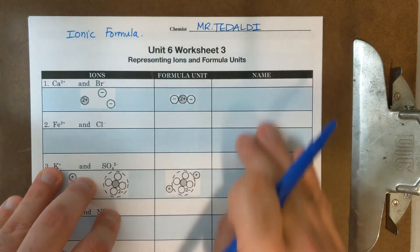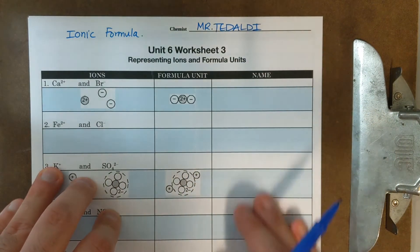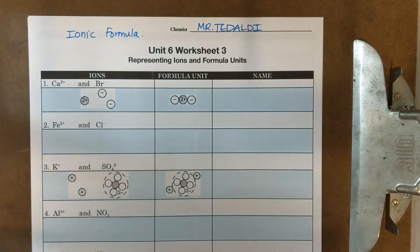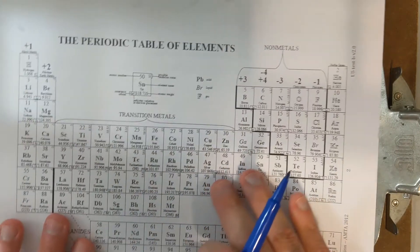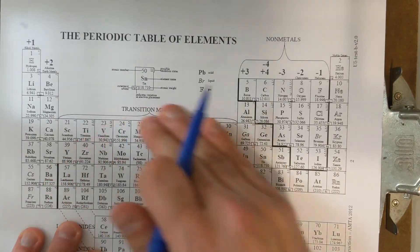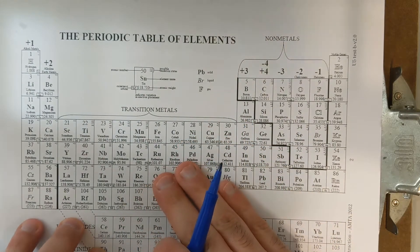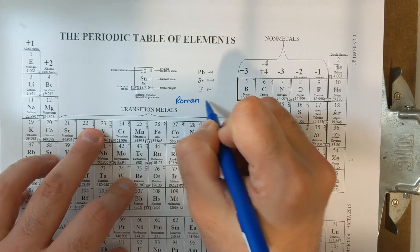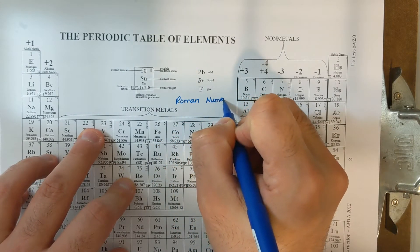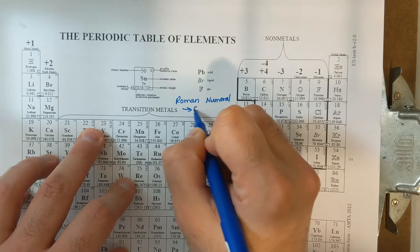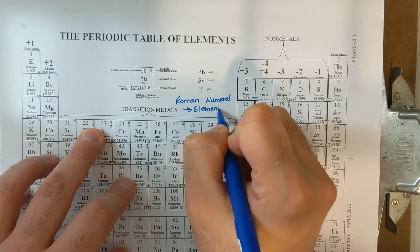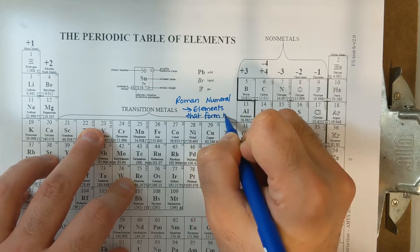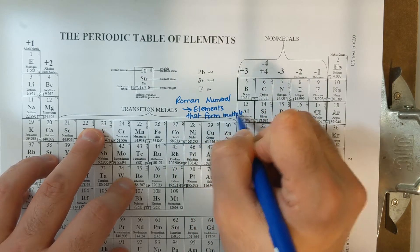Now something that you have to remember, and a couple of mistakes that happened on the quiz, were when do I put Roman numerals? And so I wanted to start with, if I'm an element in the middle of the periodic table, I'm most likely going to need a Roman numeral. The purpose of the Roman numeral is because these elements have, or form multiple charge, elements that form multiple charges.